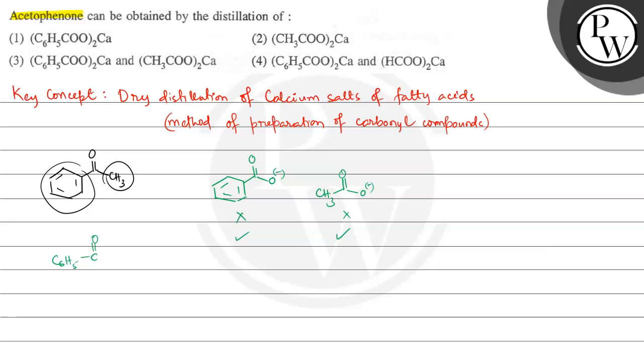C6H5 C double bond O, and then here we will be having O calcium and O C double bond O, and here we have C6H5. Along with this we will be having CH3 C double bond O oxygen, then calcium, then again oxygen, then C double bond O, and here we will be having CH3.